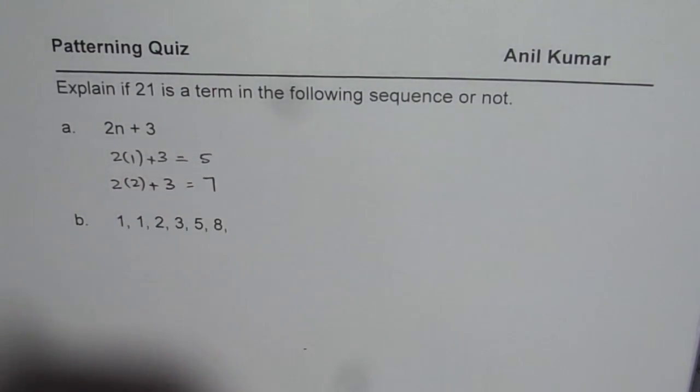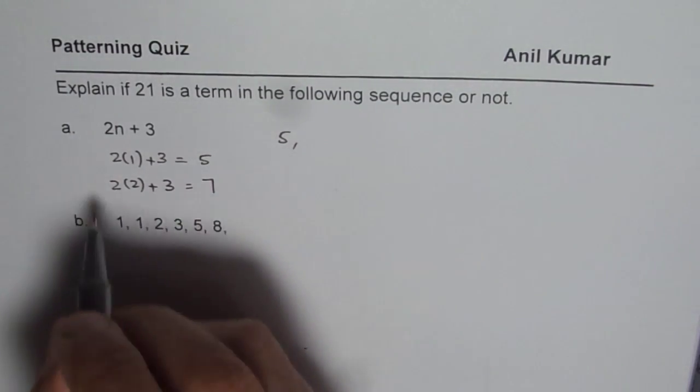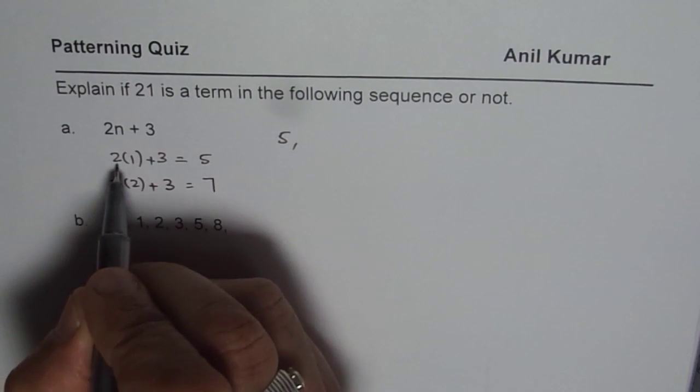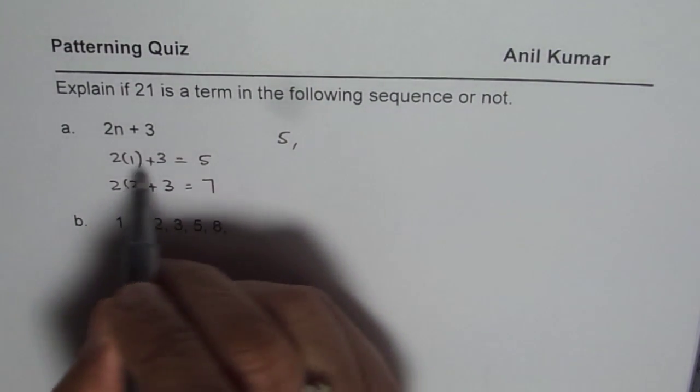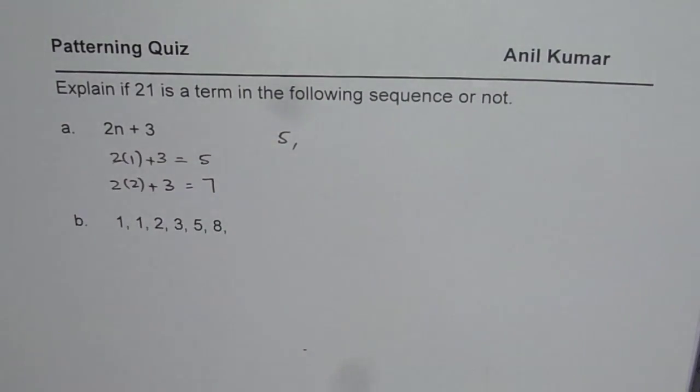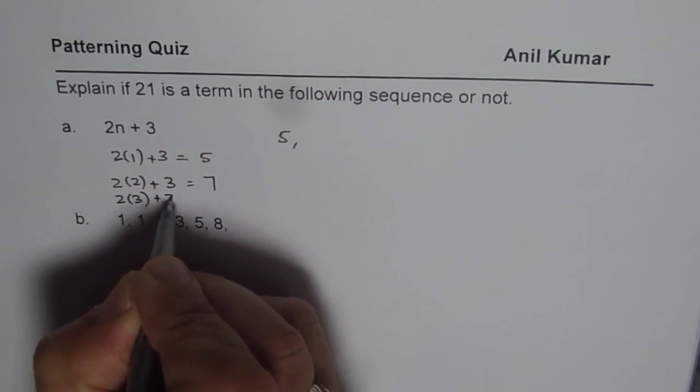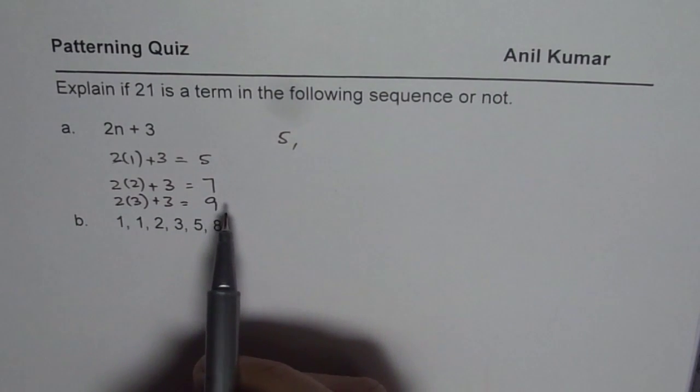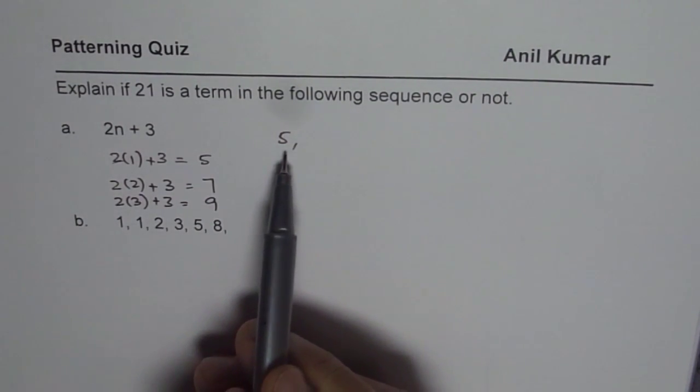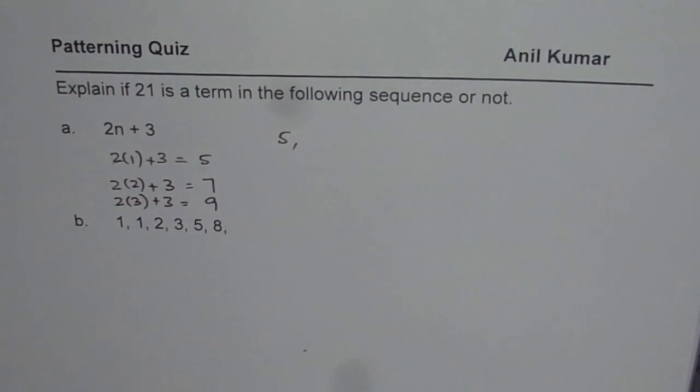So what we see is that the pattern is growing. And every time it has to grow by... so we'll put 2 times 3 also. 2 times 3 plus 3 is how much? 2 times 3 is 6. 6 plus 3 is 9. So what we see is that the pattern starts with the number 5 and it increases by 2 each time.